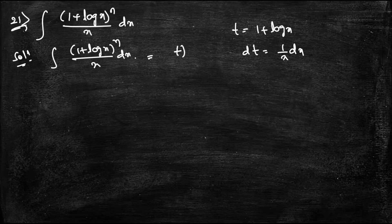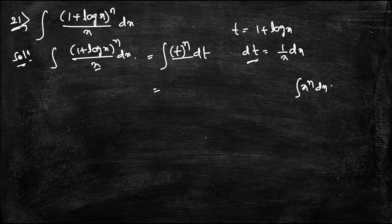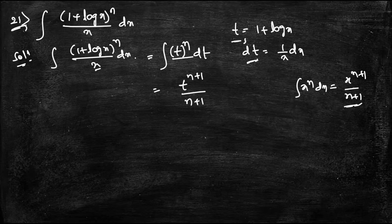Substituting, the integral becomes ∫t^n dt. Using the formula ∫x^n dx = x^(n+1)/(n+1), it becomes t^(n+1)/(n+1). Substituting back t = 1 + log x, the answer is (1 + log x)^(n+1) / (n+1).